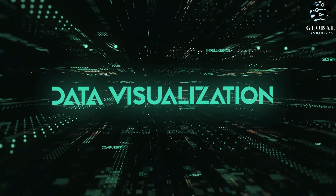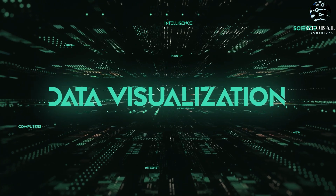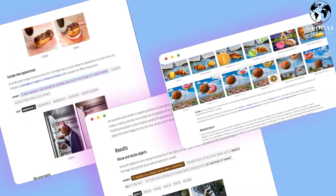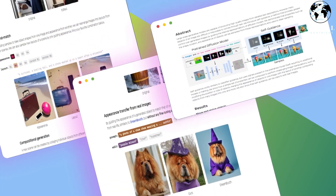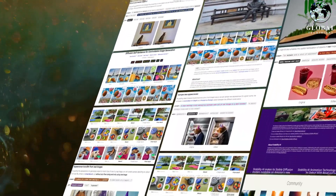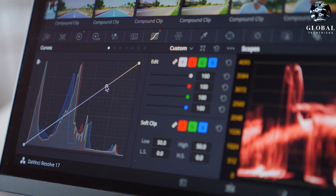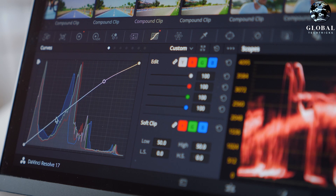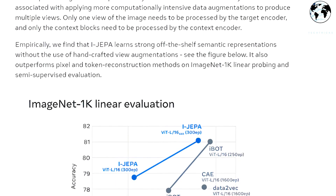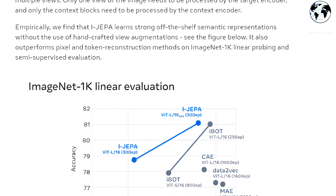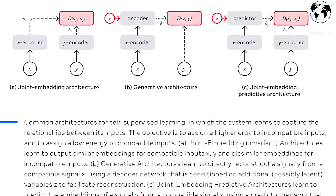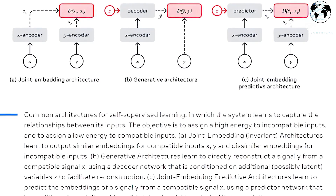This week, Meta made an exciting announcement regarding their latest AI model, which aligns with Jan LeCun's vision of creating more human-like AI. The noteworthy aspect is that this model has now been open-sourced, allowing for broader accessibility and collaboration. The model has the remarkable ability to take a fragment of an image as context and then intelligently infer and complete the rest of the image based on its understanding of the subject matter. This groundbreaking development showcases Meta's dedication to advancing AI technology, making it more context-aware and closer to achieving human-like understanding.